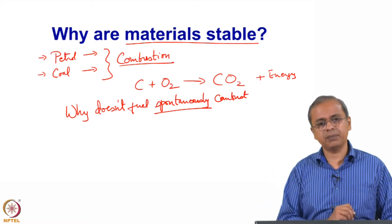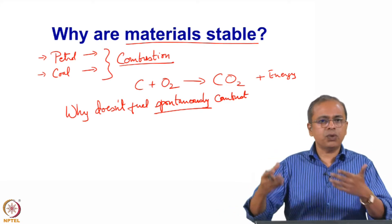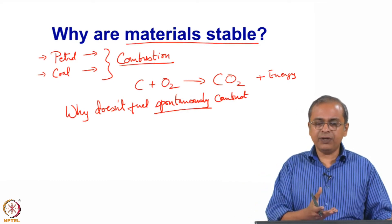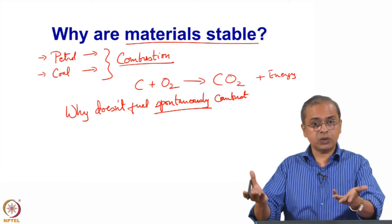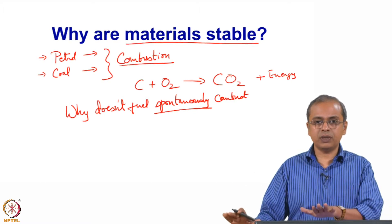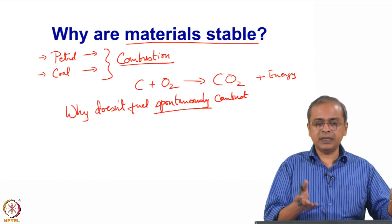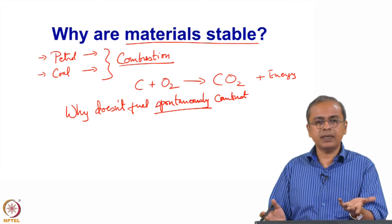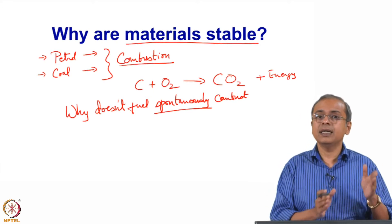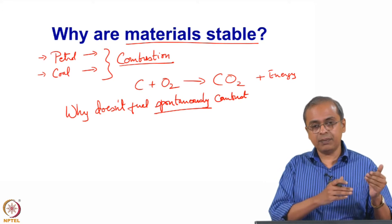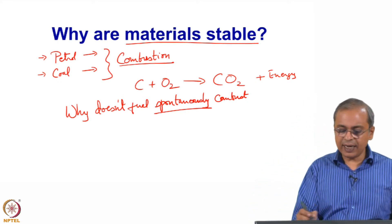Spontaneous combustion is the key question. Any organic material — wood, fabric, petrol, coal — can burn. But in reality, your doors, tables, and even we ourselves are stable organic materials that are not burning. Petrol in a tank is stable; coal held in your hand doesn't burn. All these materials are stable despite a clear understanding that they would burn rapidly and release a lot of energy.